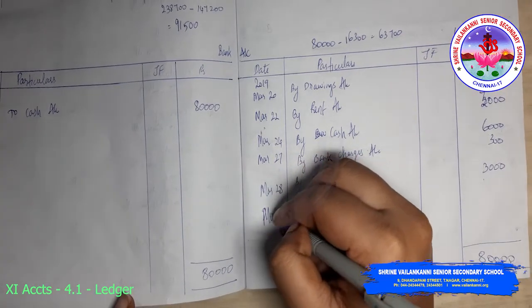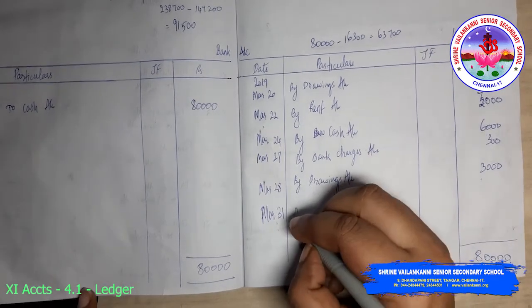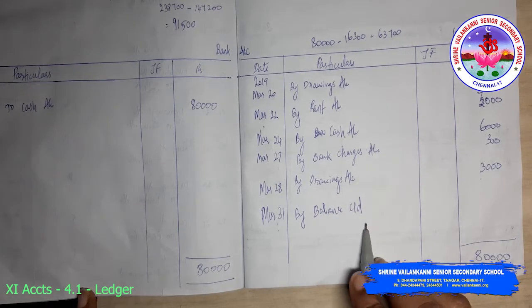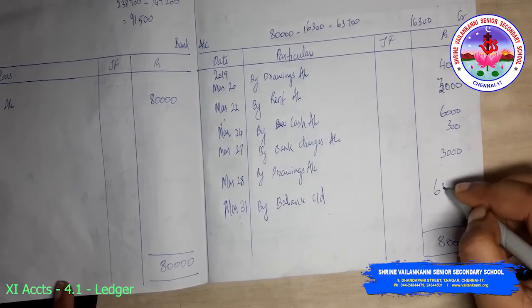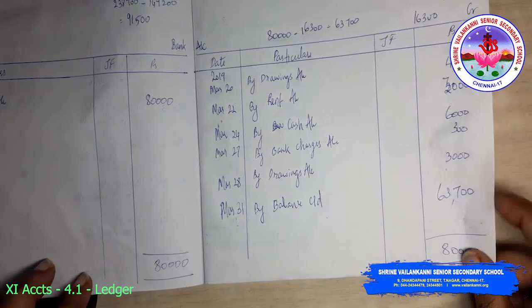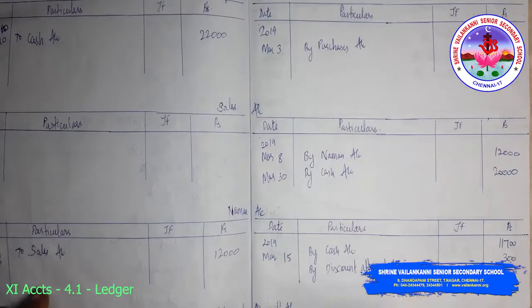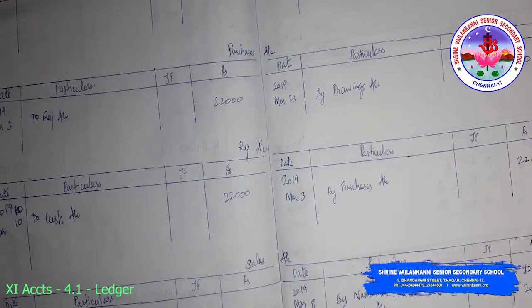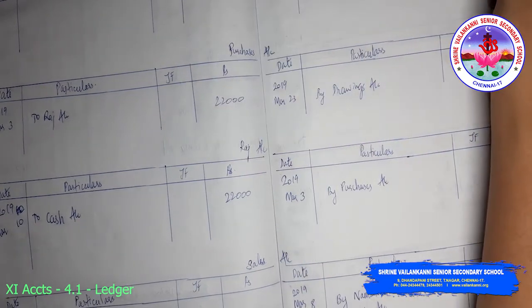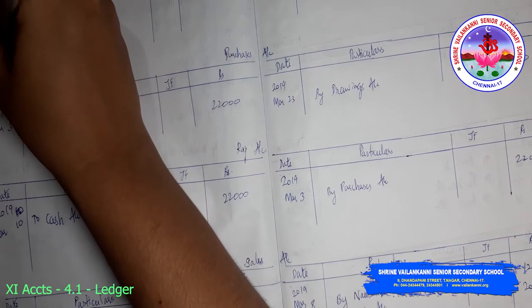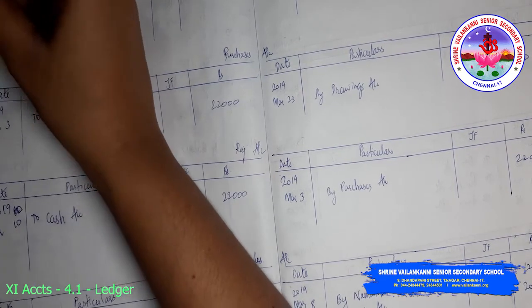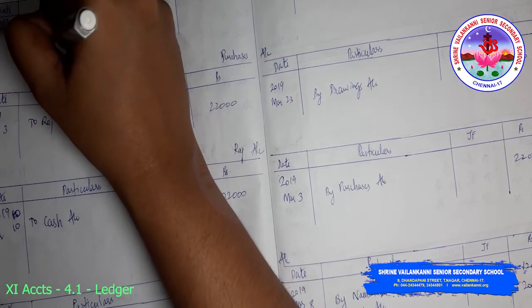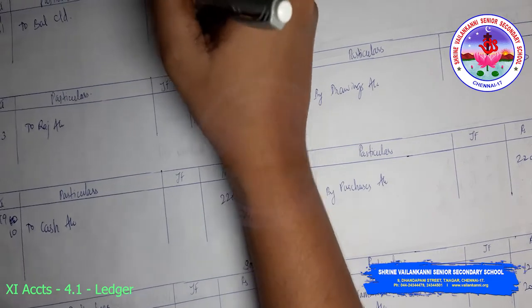By the end of the day — March 31, last day — you will balance it by balance carried down. Since it is a closing balance, you write 'carry down', so 63,700. Next: I am going to balance this capital account. Since there is only credit balance and no debit balance, just write March 31, 2019 — 'to balance carried down', 2 lakhs.